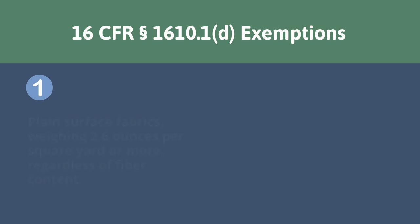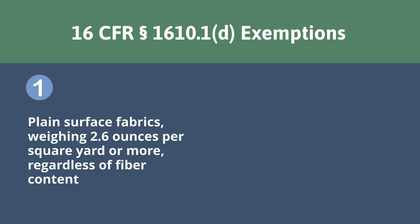For the first exemption, plain surface fabrics weighing 2.6 ounces per square yard or more do not need to be tested regardless of fiber content. Weighing the fabric does not need to be conducted by a lab — you can measure the weight yourself or check if this info is provided on the fabric roll you are using to construct the garment. You will need to keep records of any information you use to determine the weight for a minimum of five years.